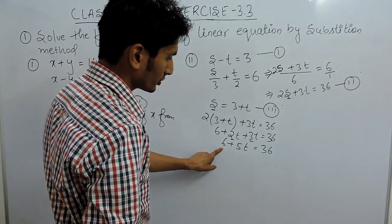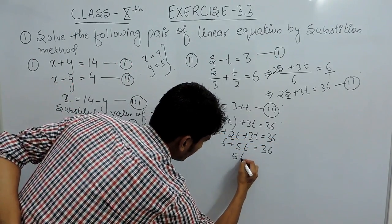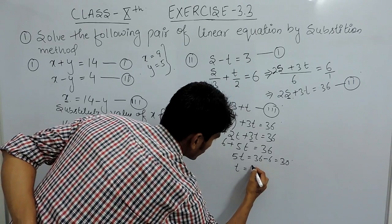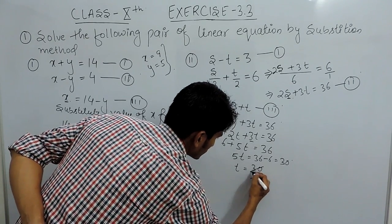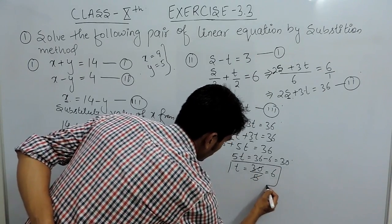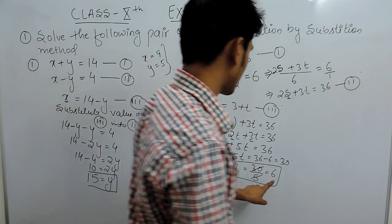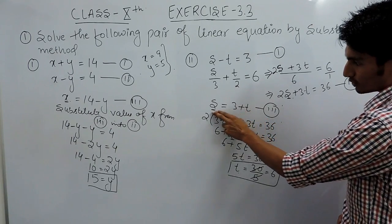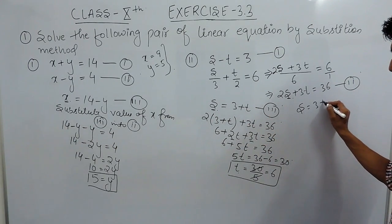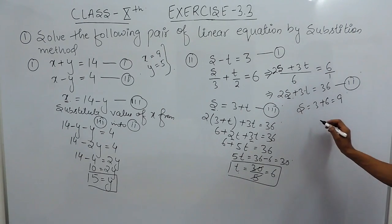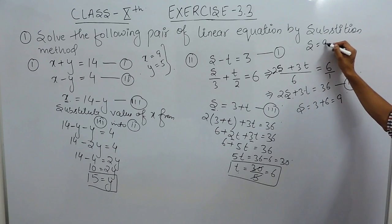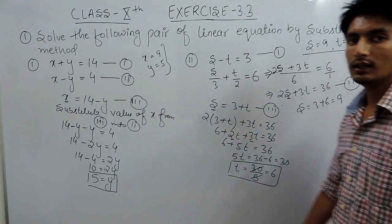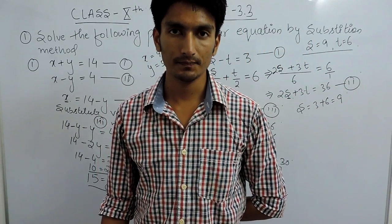So 36 minus 6 is 30, meaning 5t equals 30. The value of t is 30 divided by 5, which is 6. Substituting t equals 6 back into the equation, s equals 3 plus 6, which is 9. So the value of the first variable is 9 and the second variable is 6. This is how you can solve these kinds of questions. Thank you.